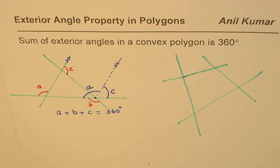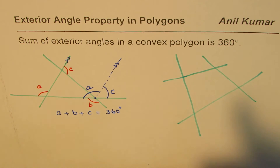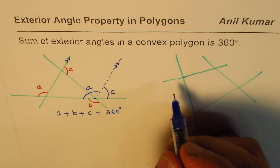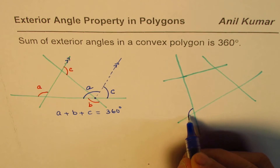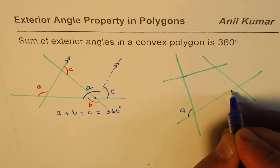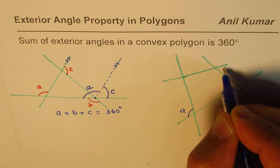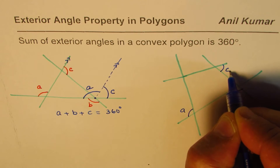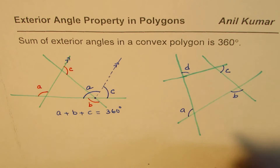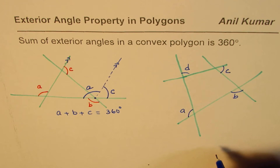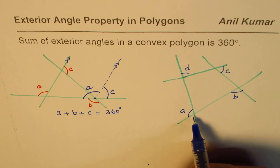I'm making an irregular but convex polygon with four sides. The exterior angles, just as we plotted before, are: this is A, this is B, then we have C here, and then D here. These are the four exterior angles.